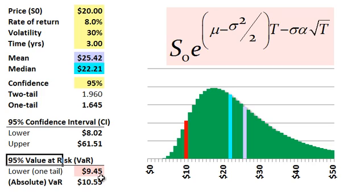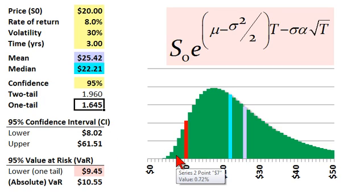Then finally, we get to the value at risk question, the 95% value at risk. Now, that has to be a one-tail. I get this question a lot, is can VaR be two-tailed? The answer is no. VaR is only concerned with losses on the downside.